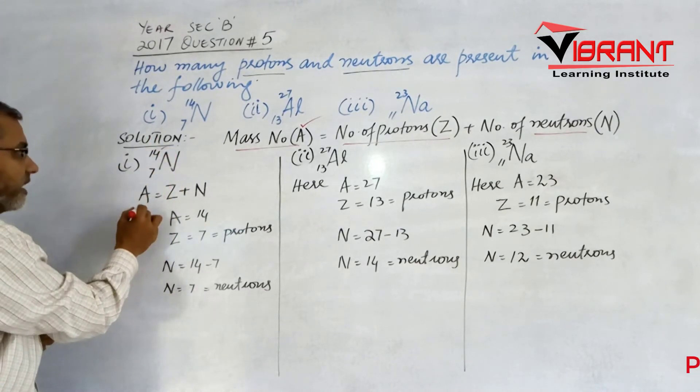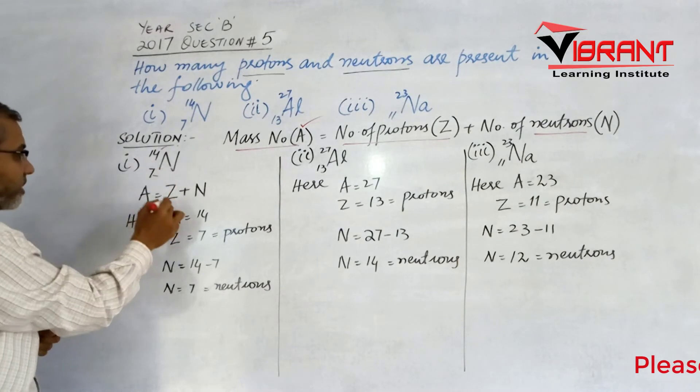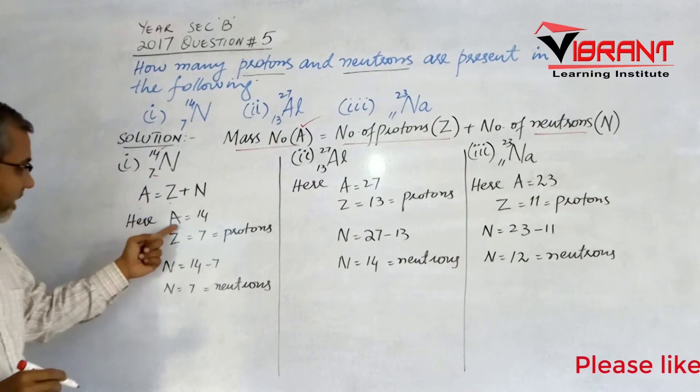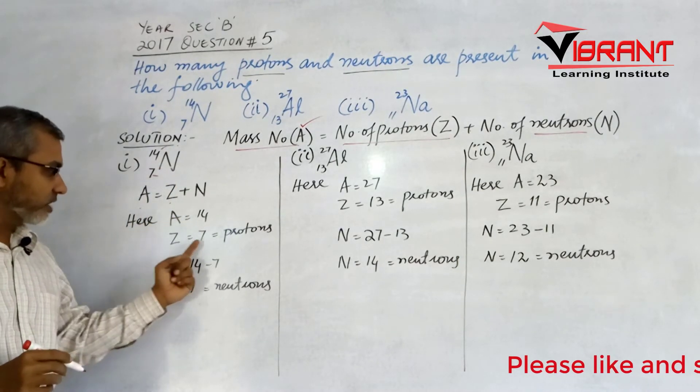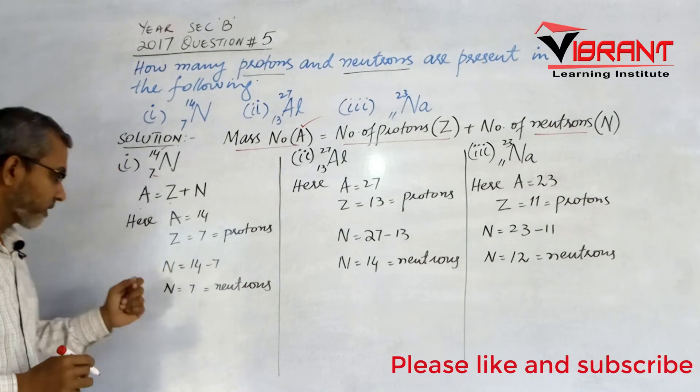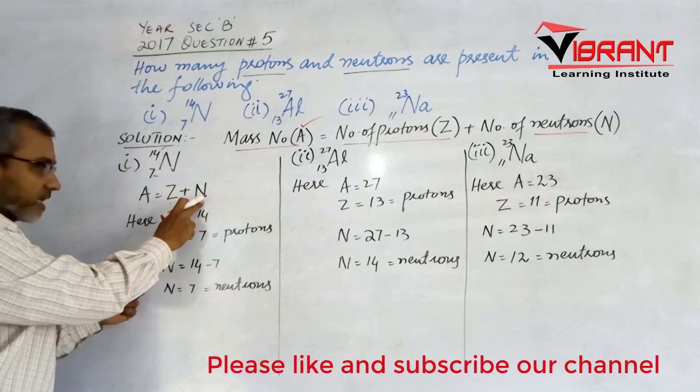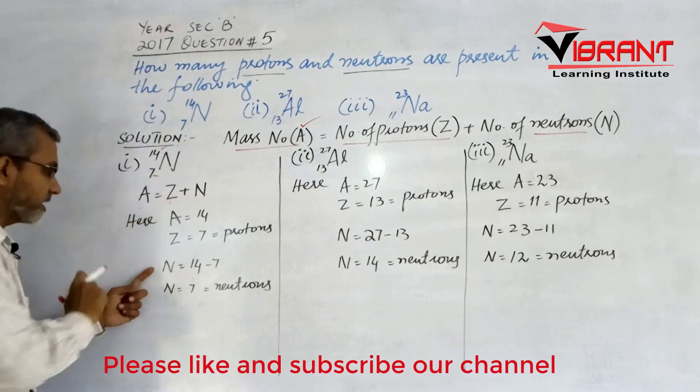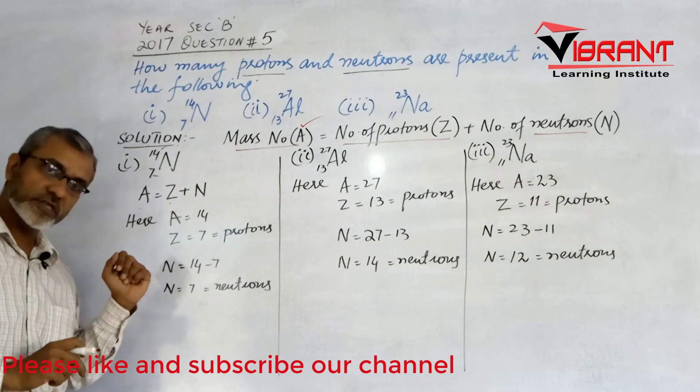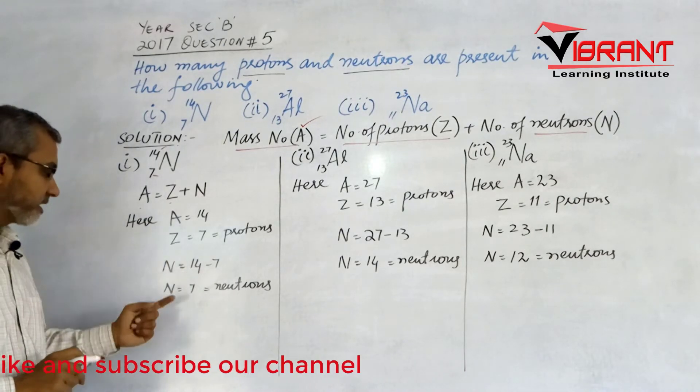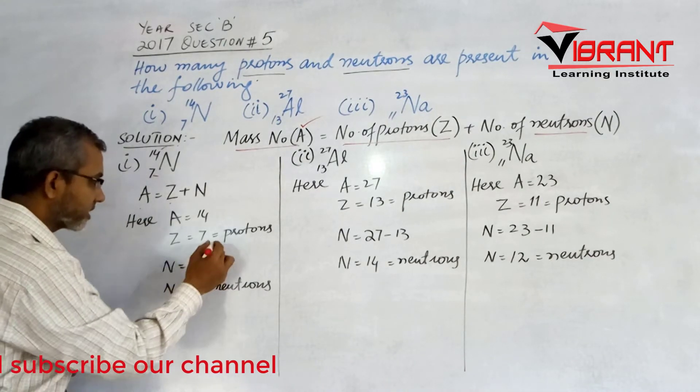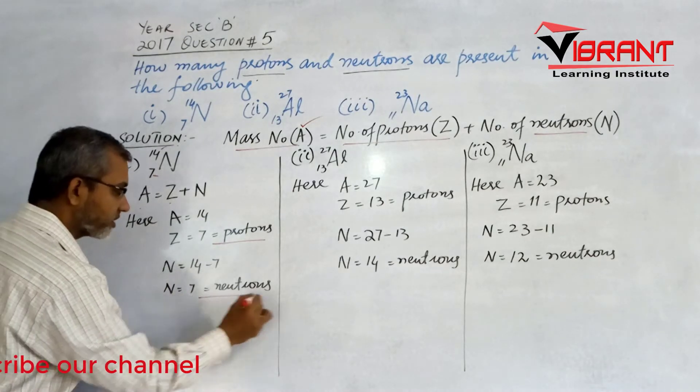For nitrogen-14, A is 14 and Z is 7, which is the number of protons. The number of neutrons N equals A minus Z, so 14 minus 7 equals 7 neutrons.